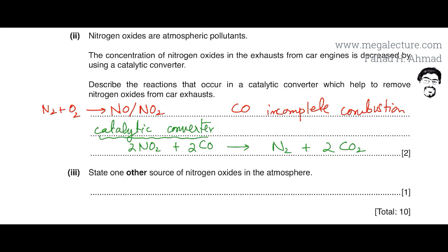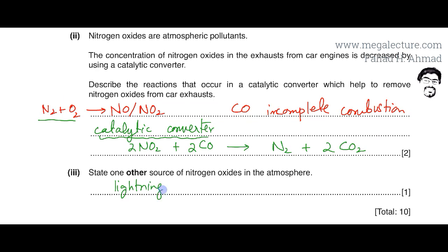The final part asks for sources of nitrogen oxides in the atmosphere. As mentioned, air contains nitrogen and oxygen, and when air heats up these gases react to produce oxides of nitrogen. Car engines are one source where this heating occurs. Another source is lightning — when lightning strikes, the air heats up and nitrogen and oxygen react to produce NO or NO2.